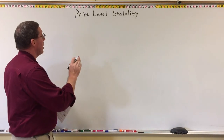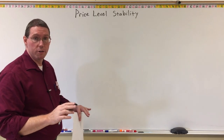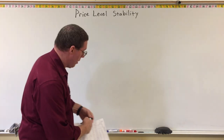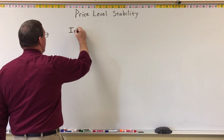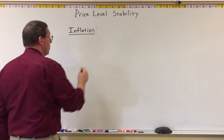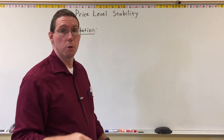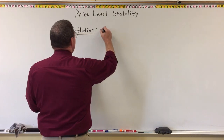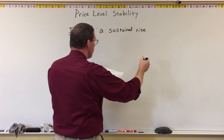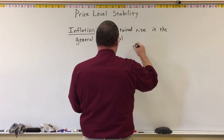In order to understand price level stability, there are several concepts that you need to understand — you need definitions for. The first concept you're going to need to understand is a word you're probably familiar with: inflation. Now I'm going to give you the official textbook definition first, then a more casual, less formal definition. Inflation is a sustained rise in the general price level within an economy.